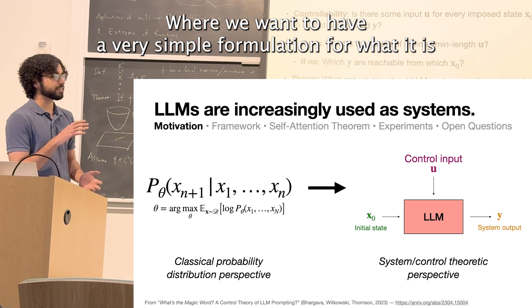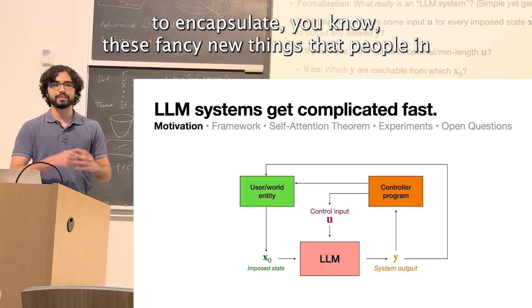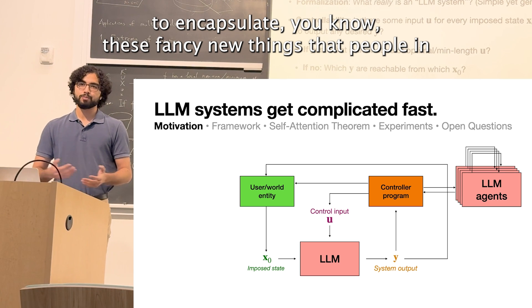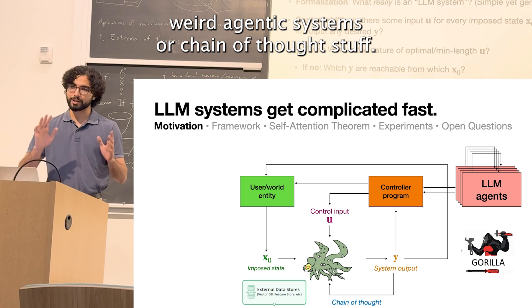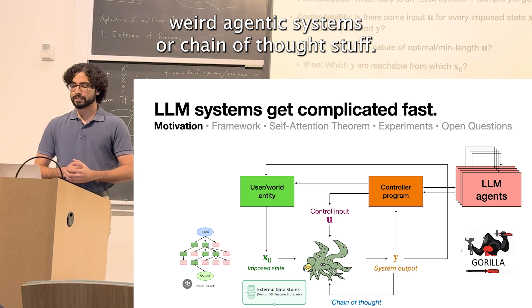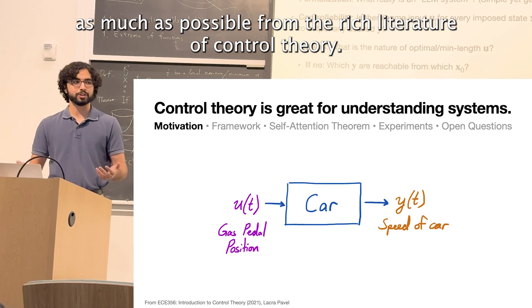We want to have a very simple formulation for what it is that's sufficiently general to encapsulate these fancy new things that people in computer science and engineering are building like these weird agentic systems or chain of thought stuff. We also want it to inherit as much as possible from the rich literature of control theory.